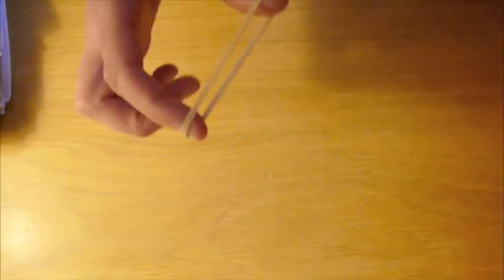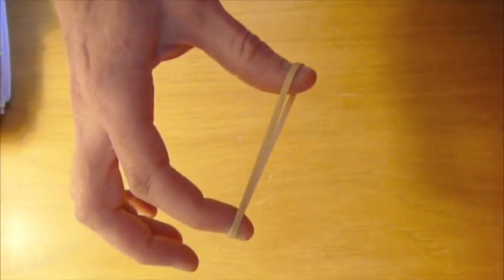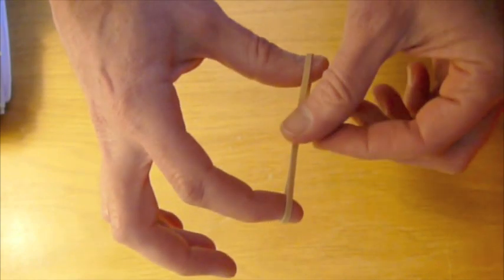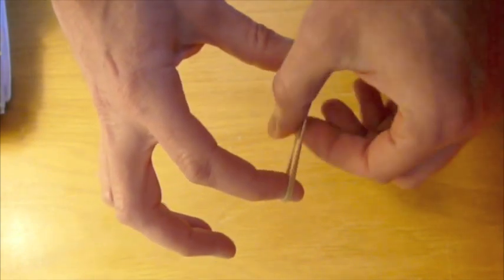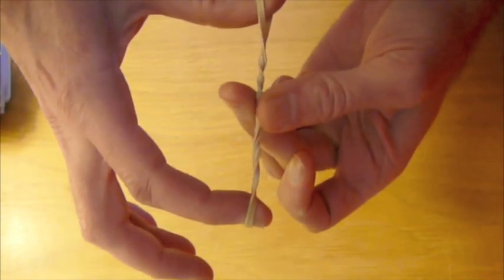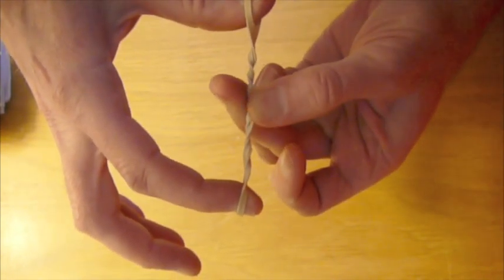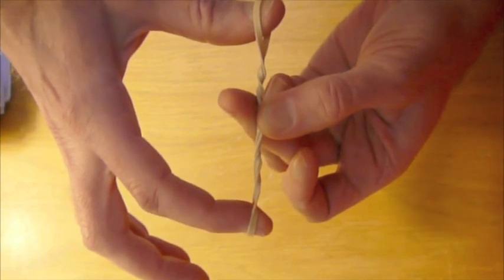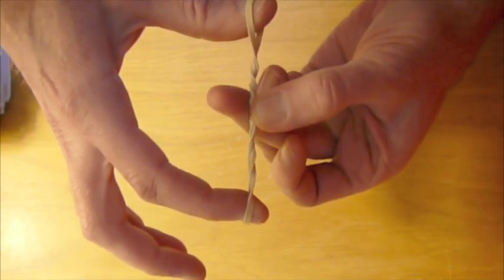There's an interesting property of waves which I'll demonstrate here with this rubber band. If you generate waves from a point, I'm just going to grab this and twist it, you can see that the threads here are right-handed on one side and left-handed on the other side.